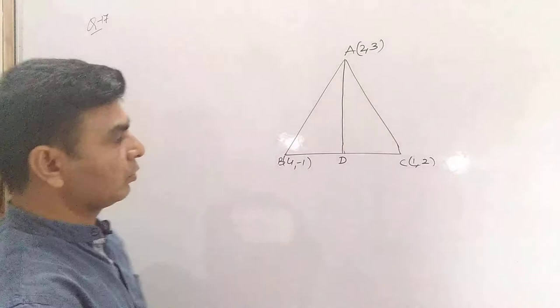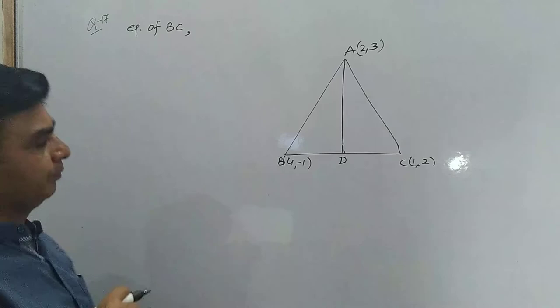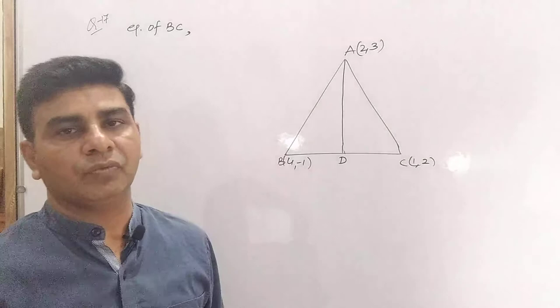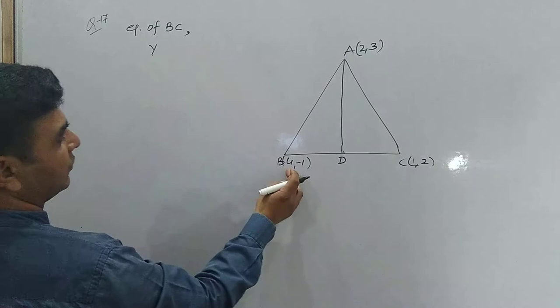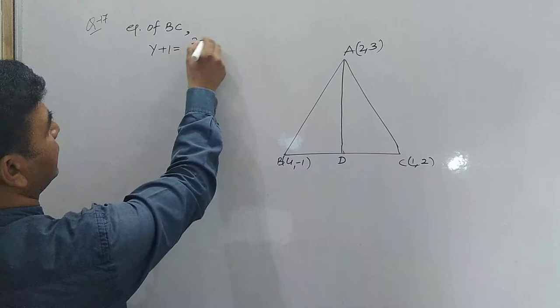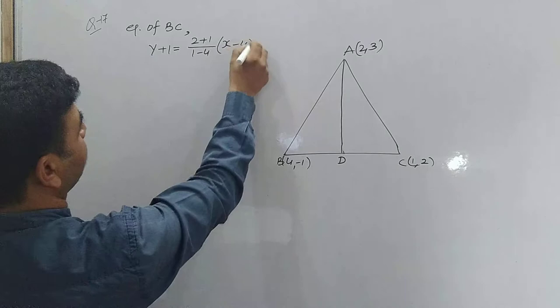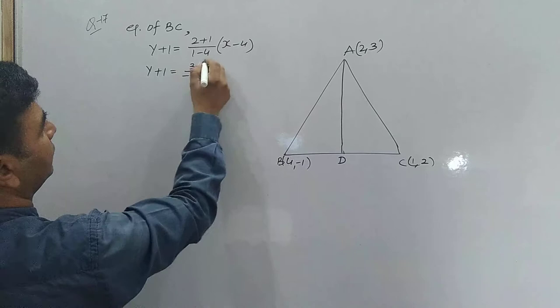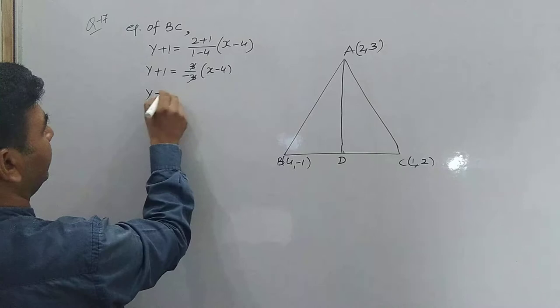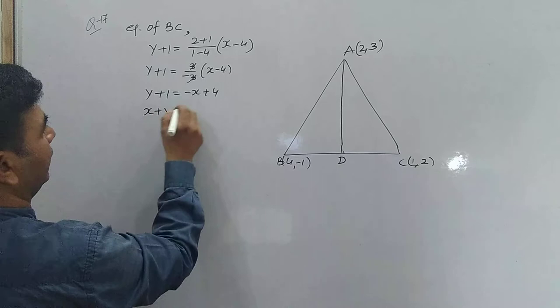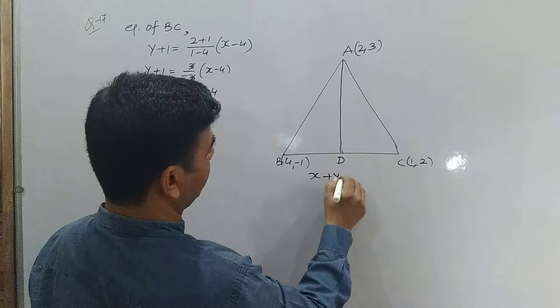Equation of line BC can be obtained through the two-point form. Line BC passes through two points B and C, so it is easy to find its equation. Using the two-point form: y minus y₁ = [(y₂ - y₁)/(x₂ - x₁)] × (x - x₁), we get y + 1 = -(x - 4), which simplifies to x + y - 3 = 0. So the equation of line BC is x + y - 3 = 0.